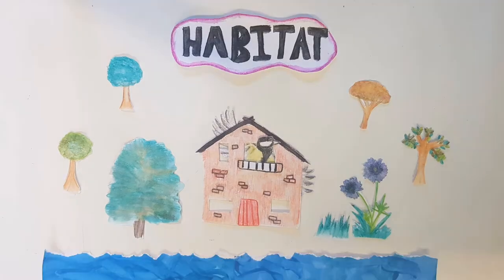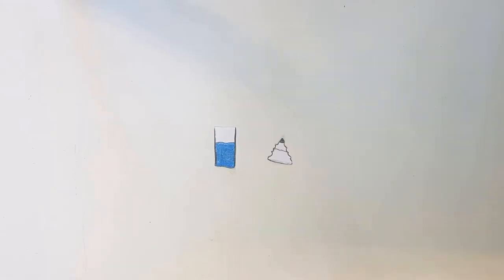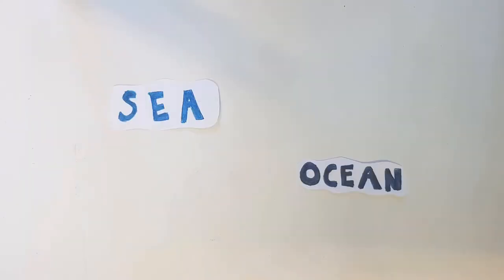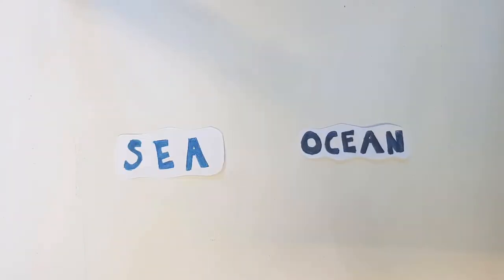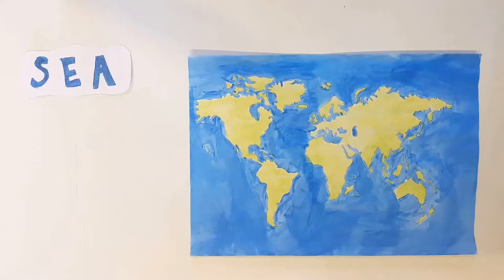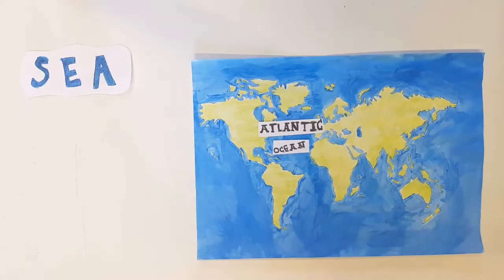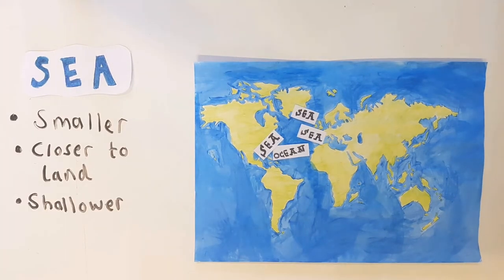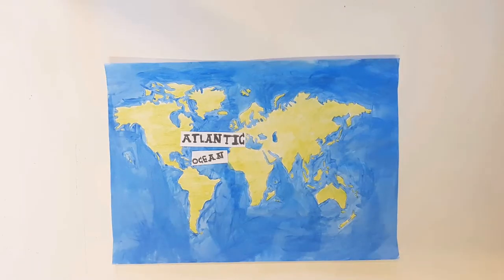Today we're going to talk about the sea. The seas and the oceans are very large bodies of salty water. You may be wondering what actually is the difference between the sea and the ocean? Well, all seas are part of oceans but they tend to be smaller areas closer to land. They are more shallow than the ocean.